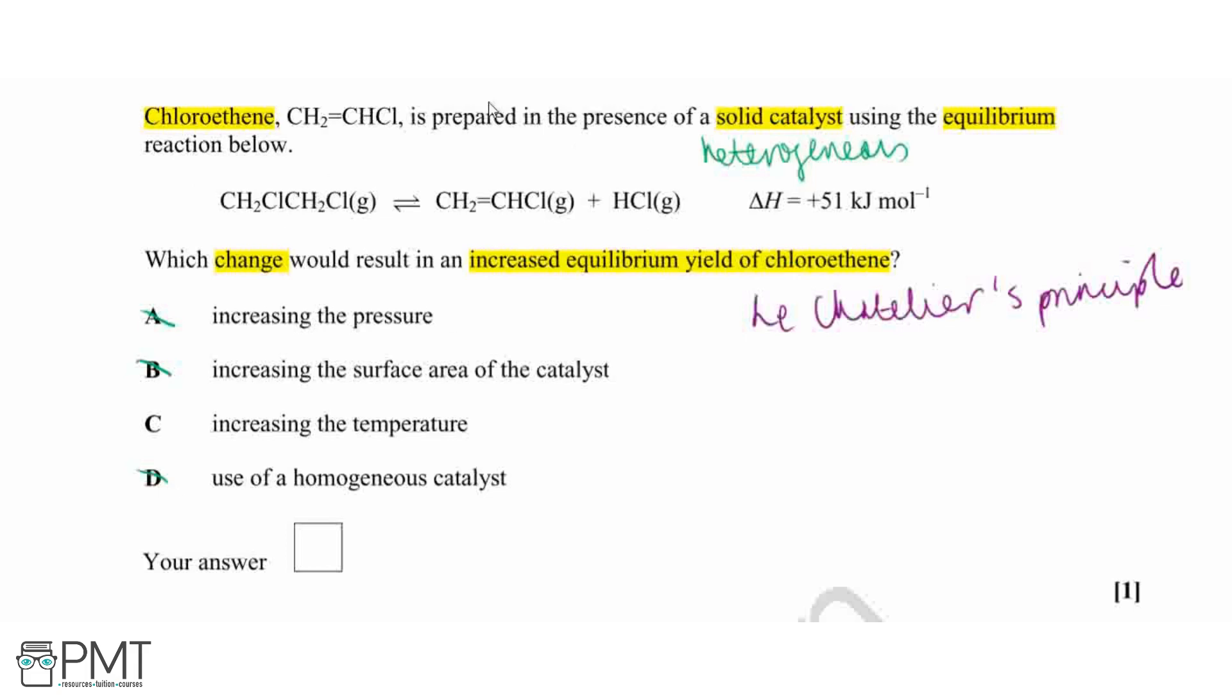But increasing our temperature will favor our forward reaction. This is because our forward reaction is endothermic. So if we increase the temperature of our system, then this will be absorbed by the forward reaction and decrease the temperature back down again. It will restore that equilibrium with the conditions. Therefore, we will get that increased equilibrium yield of chloroethene. So our answer is going to be C.